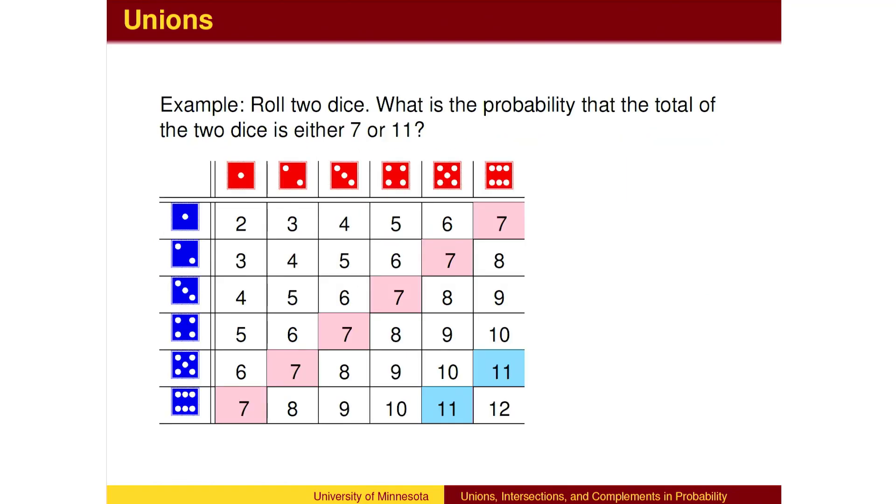Here is a visual of the situation. There are 6 occurrences of a total of 7, shaded in pink, and 2 occurrences of a total of 11, shaded sky blue, for a total of 8 possibilities out of 36. We merely add the pink and blue boxes together.